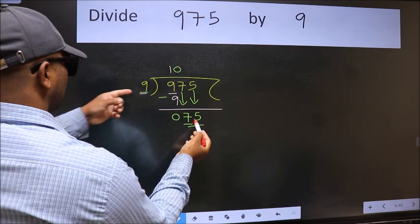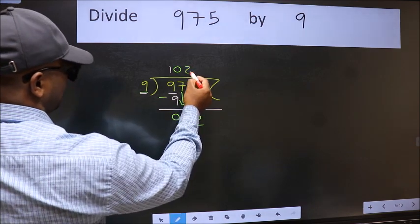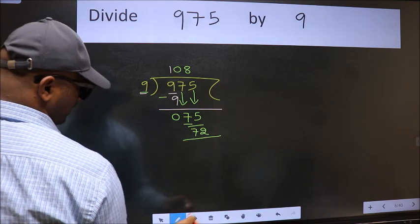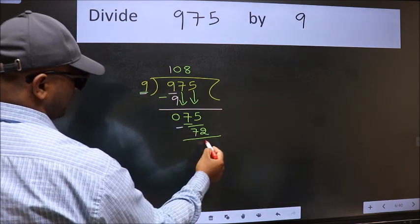A number close to 75 in 9 table is 9 times 8, 72. Now we should subtract. We get 3.